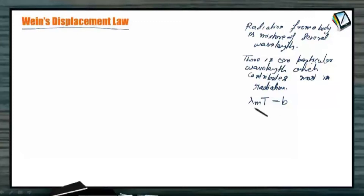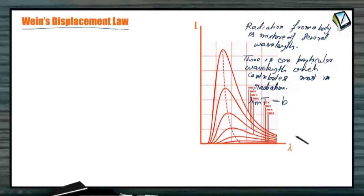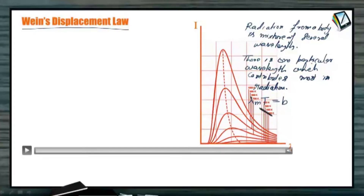If we increase the absolute temperature of the body, then the particular wavelength which contributes most to the total intensity and total energy will be inversely proportional to the absolute temperature. We can make a graph between the wavelength and the contribution of the wavelength to the total intensity. These graphs are plotted for different temperatures. As temperature increases, the particular wavelength for which the intensity contribution is maximum decreases.